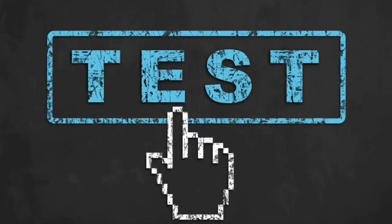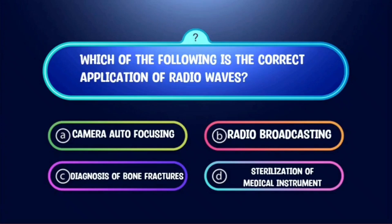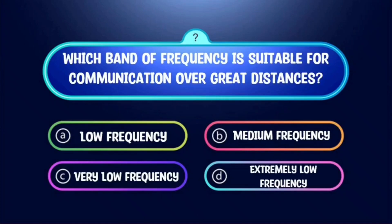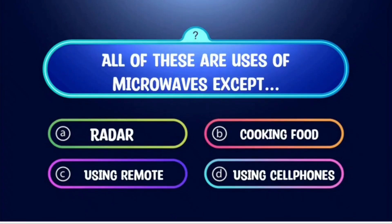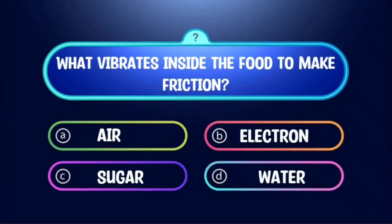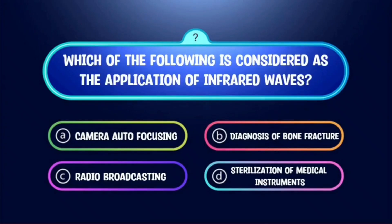For your post-test, you have to answer the following questions: Which of the following is the correct application of radio waves? Which band of frequency is suitable for communication over great distances? All of these are uses of microwaves except… What vibrates inside the food to make friction? And which of the following is considered an application of infrared waves?